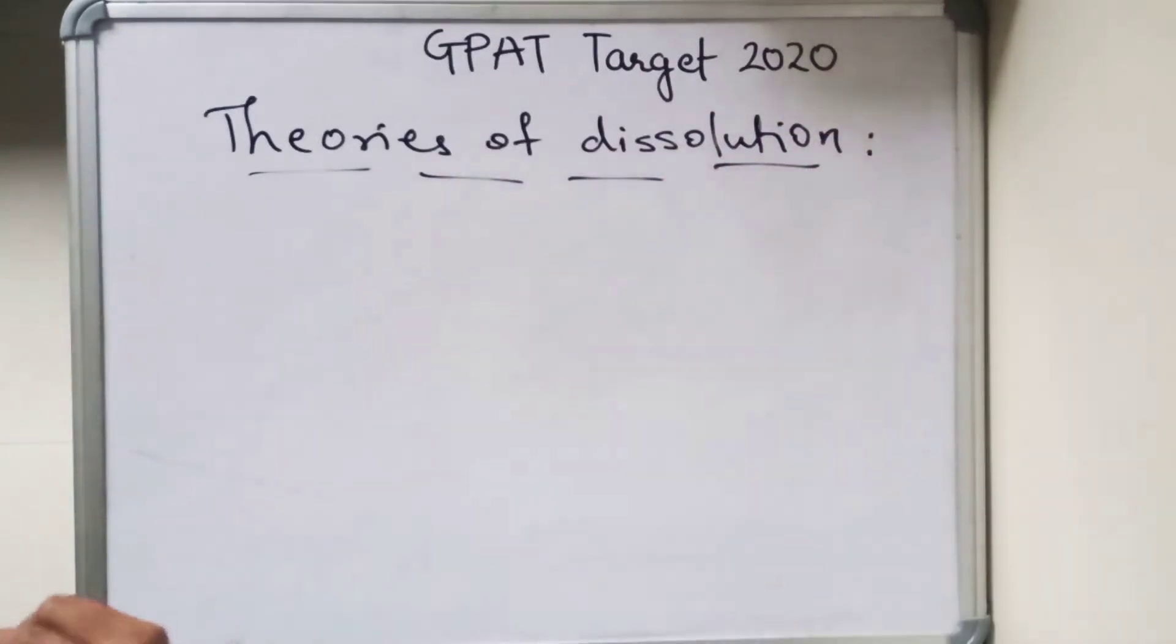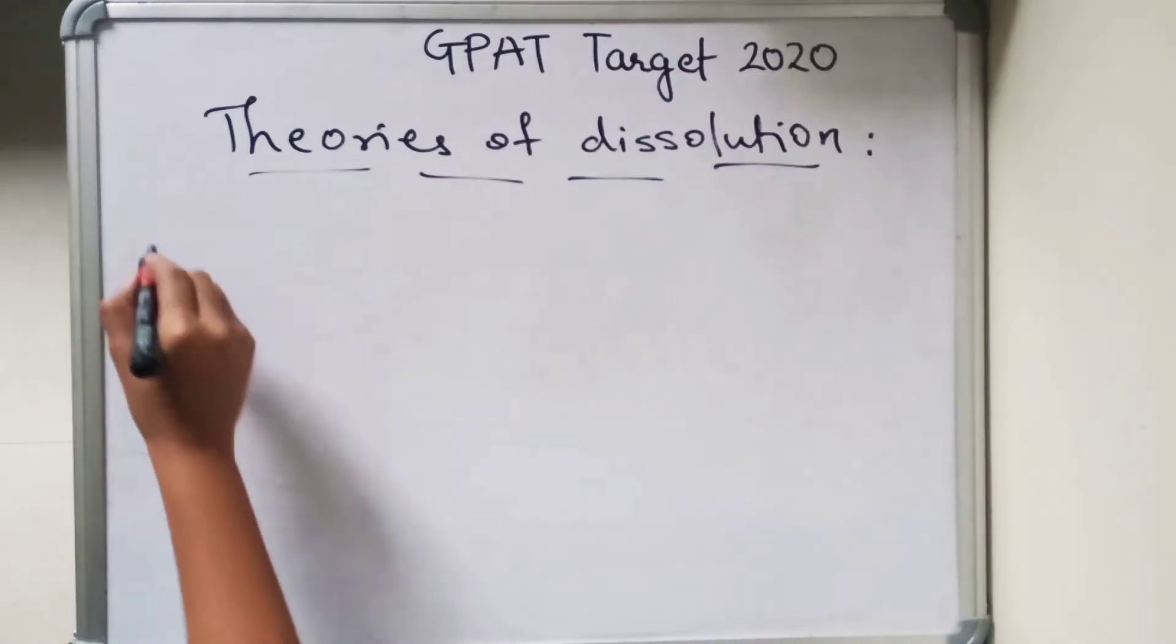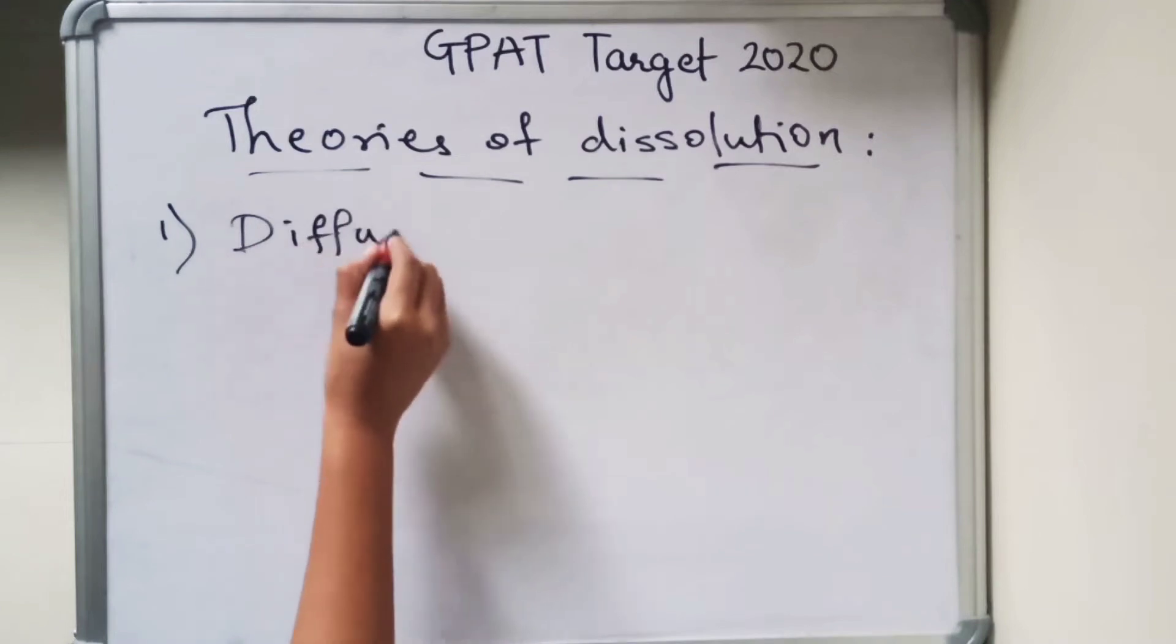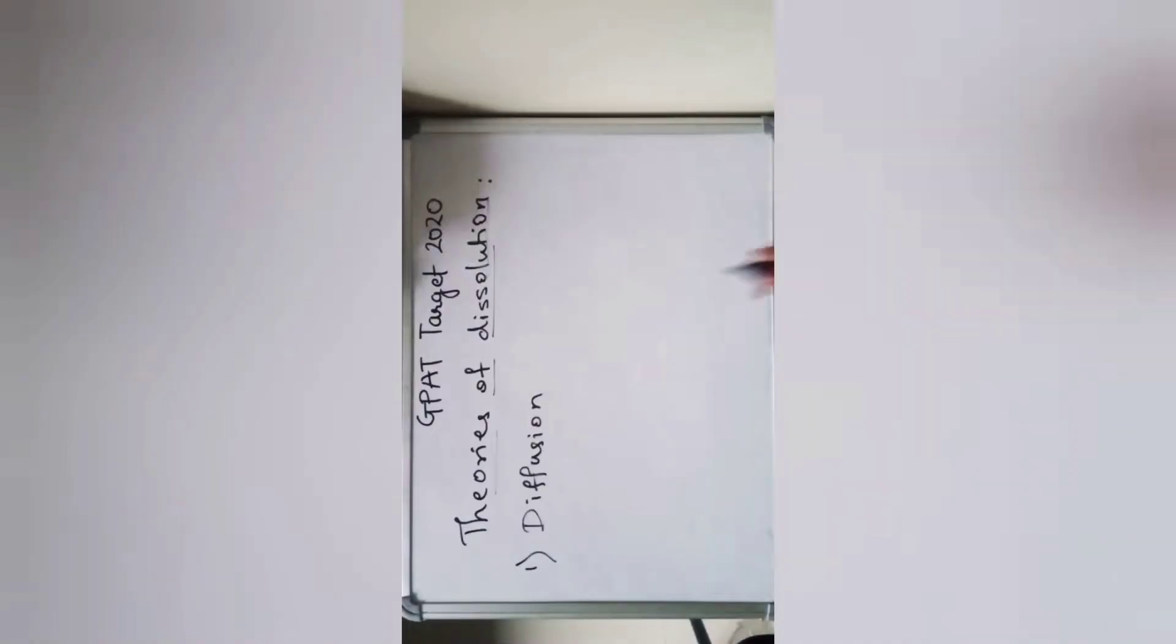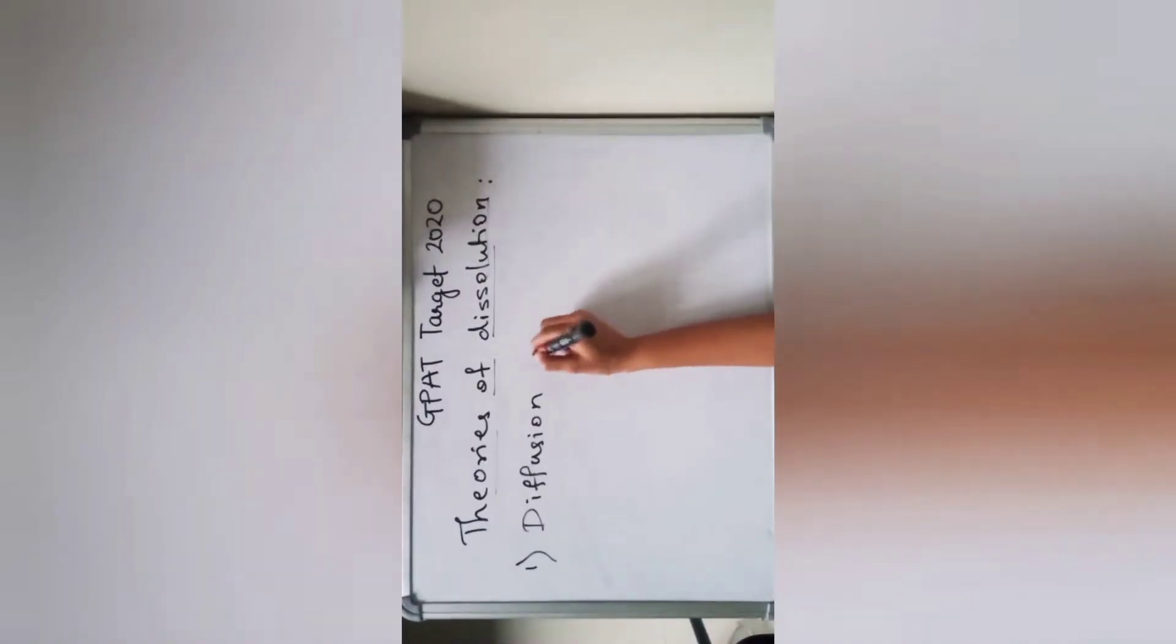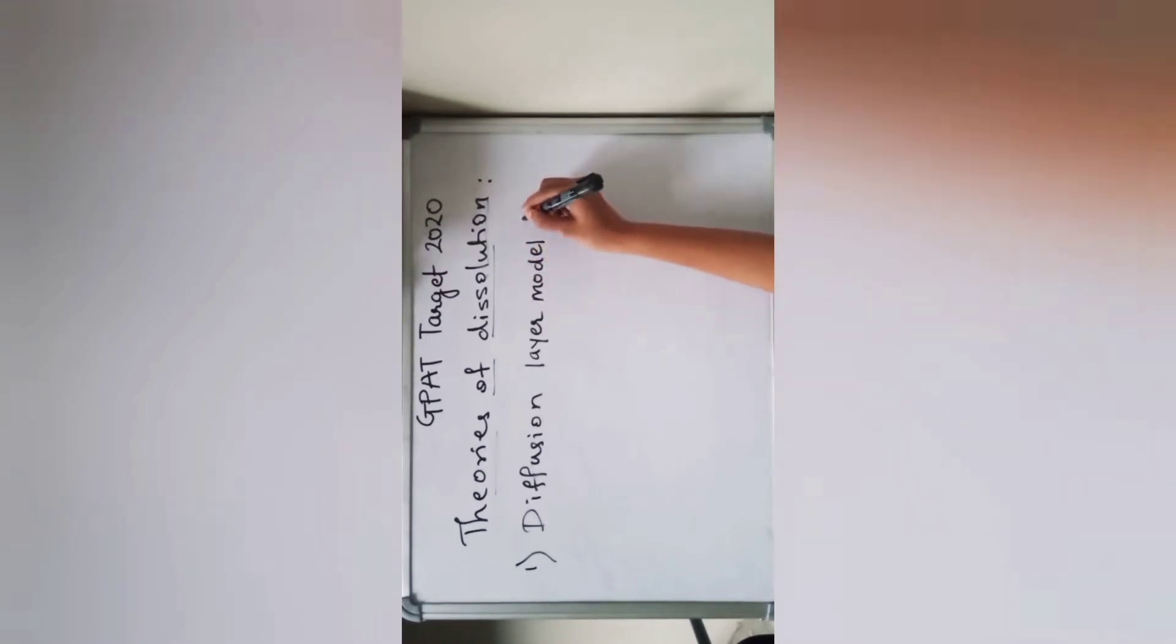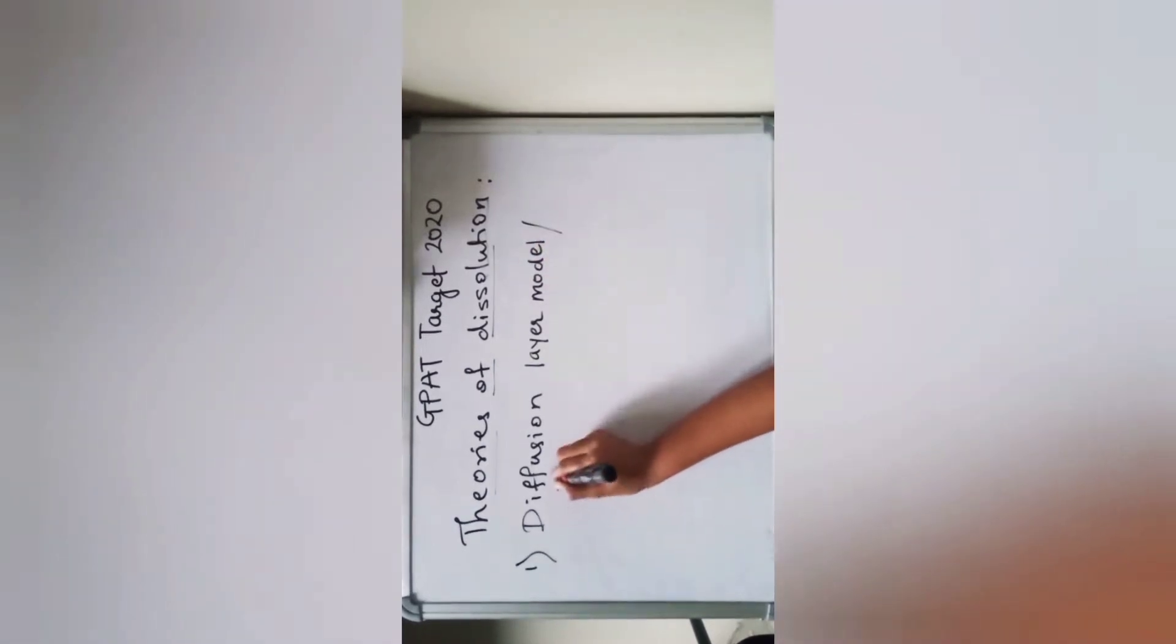There are basically three types of dissolution theory. First is diffusion layer model, also known as film theory.